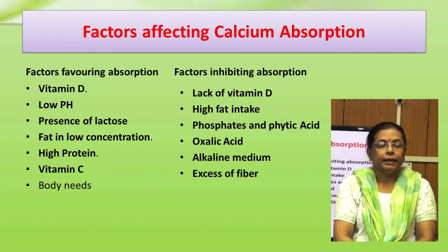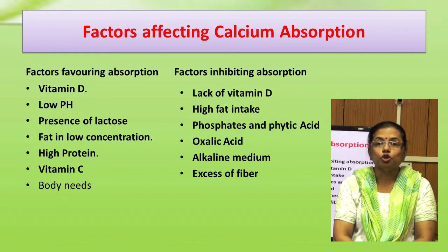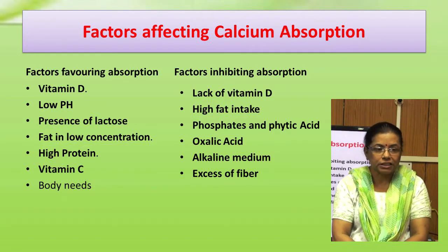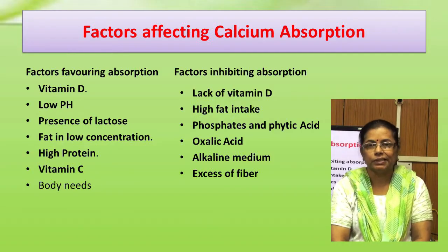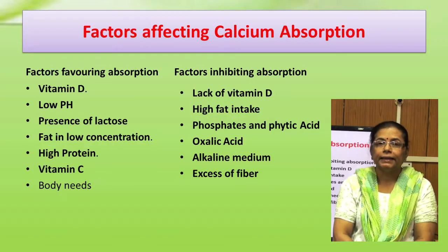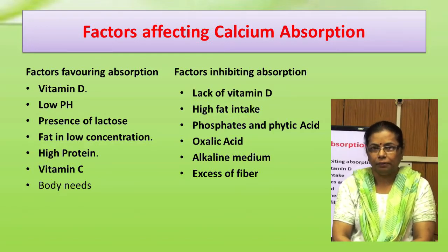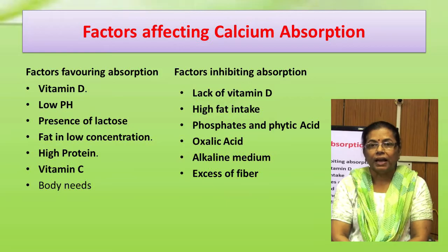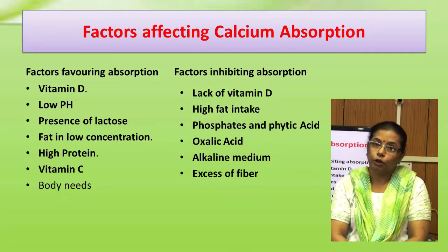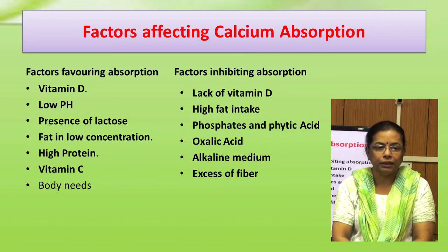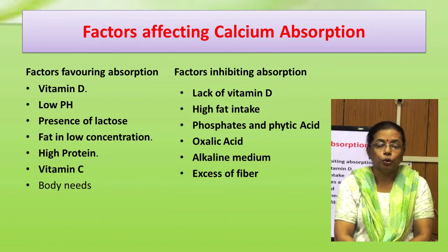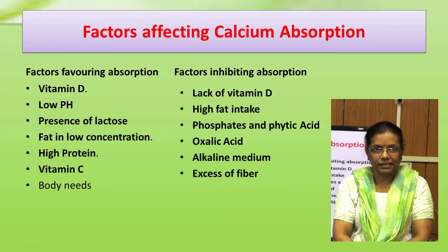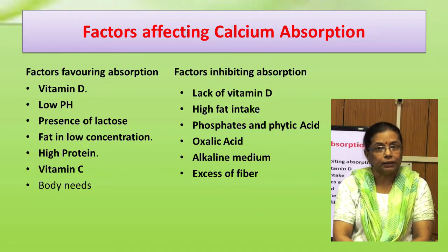High fat intake forms insoluble complexes of calcium with fatty acids and excretes them in the feces. Phosphates and phytic acids are found in whole cereals, bran, and some legumes; they bind calcium and make it unavailable. Oxalic acids are found in certain foods such as tea, coffee, cocoa, and green leafy vegetables, and also bind calcium making it unavailable. Alkaline medium decreases calcium absorption by forming tricalcium phosphate, which is insoluble and excreted. Excess fiber also hinders calcium absorption.